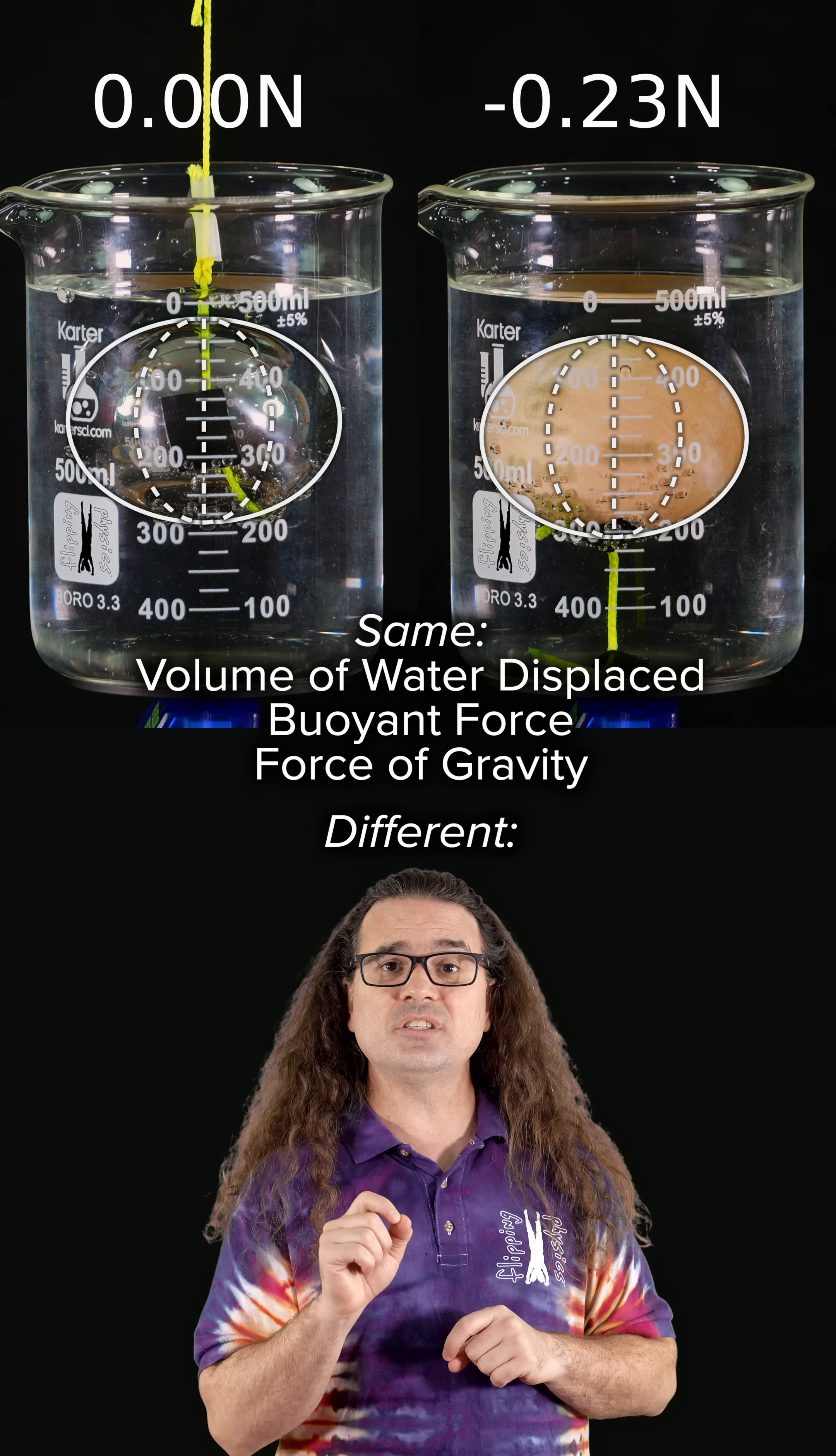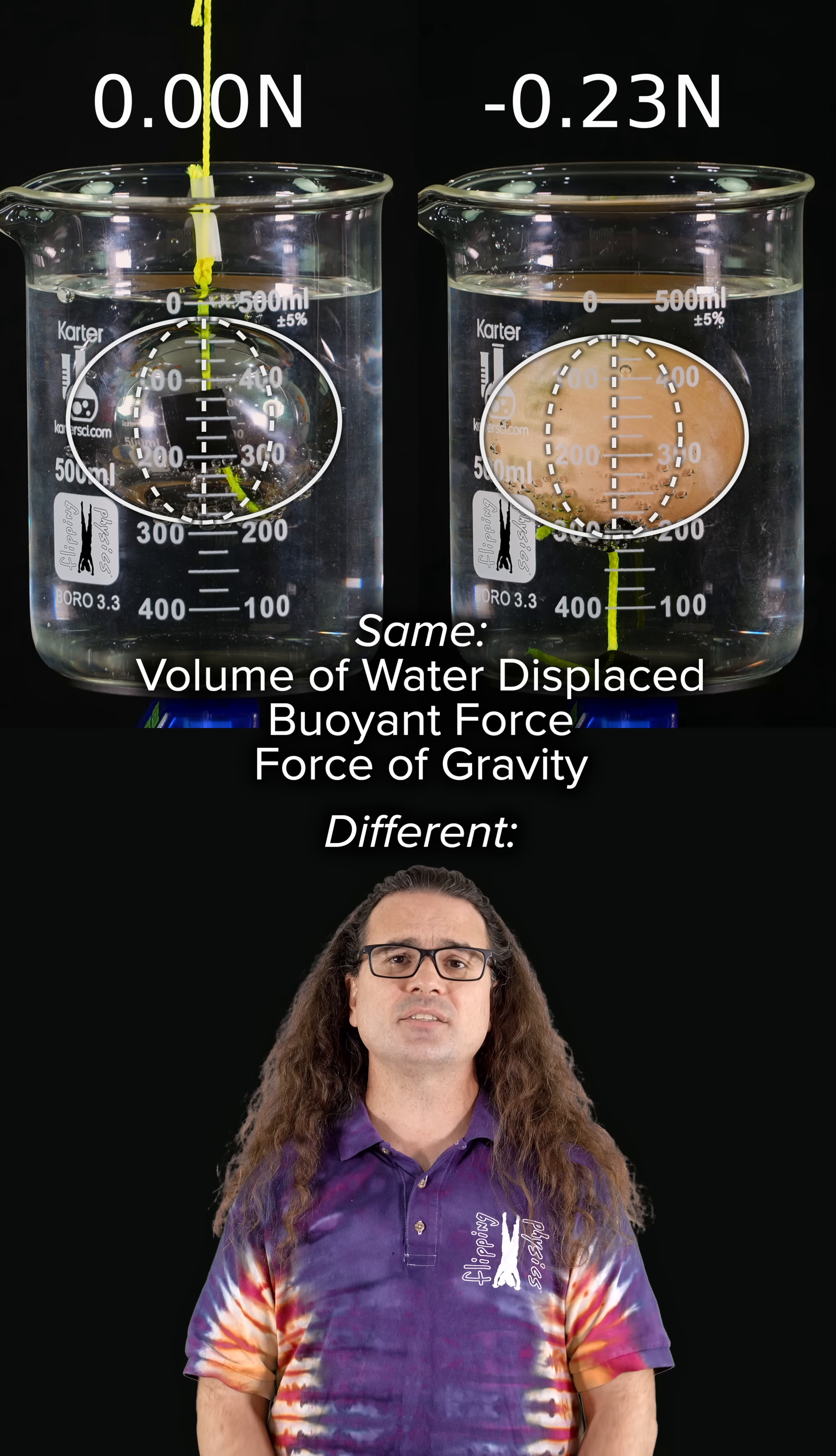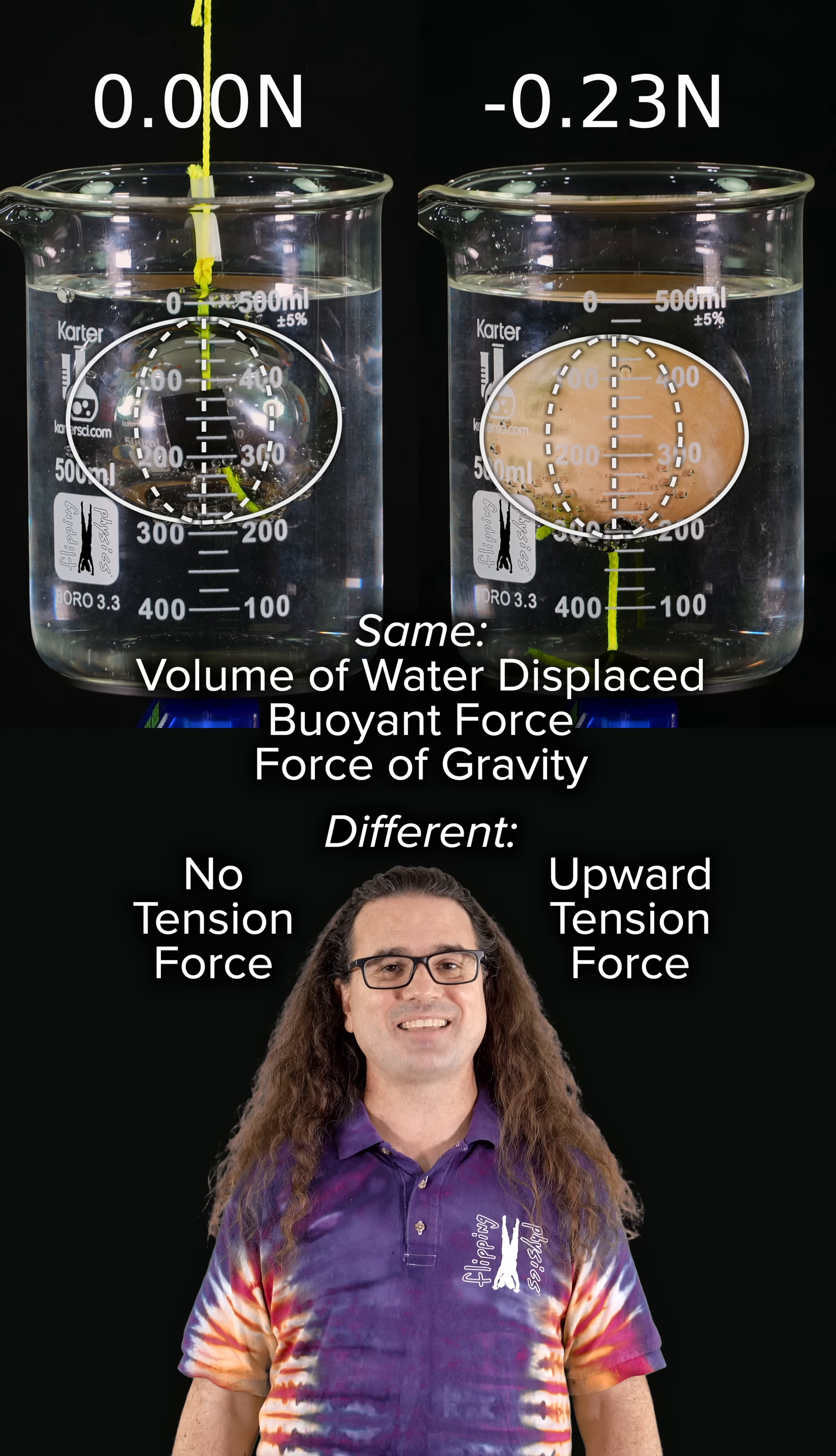The difference is that the wood sphere is pulling up on the bottom of the beaker via the string. The string causes an upward force of tension on the beaker and that reduces the reading on the scale.